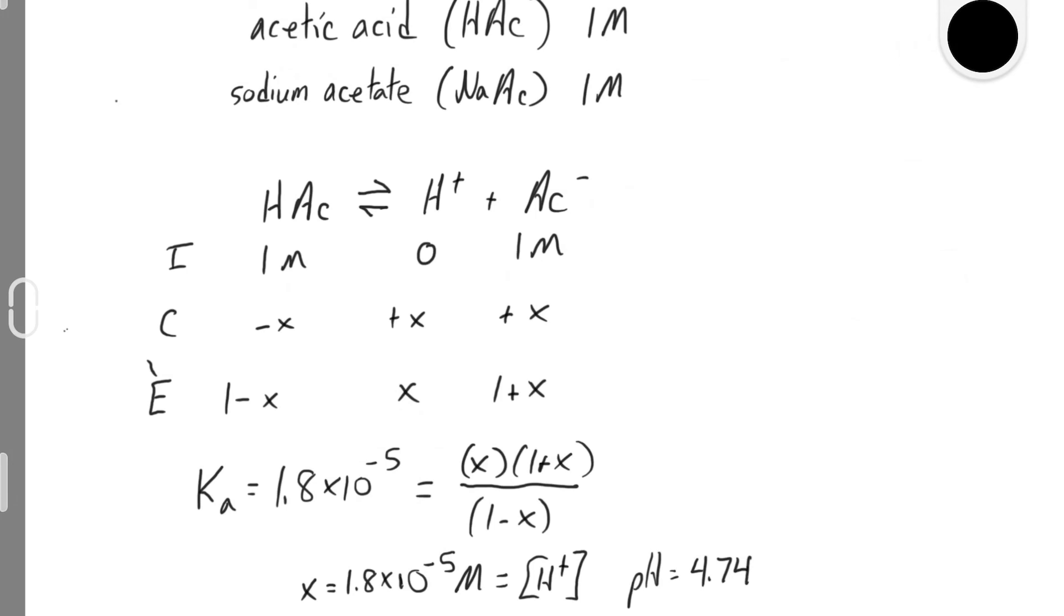If we make this approximation, we can use the Henderson-Hasselbalch equation, and this equation can greatly simplify buffer calculations. Instead of doing an entire ICE table, all you need is a pKa and the initial concentrations of your conjugate base and conjugate acid.